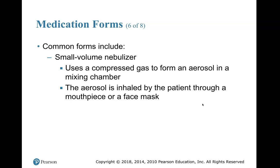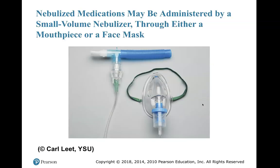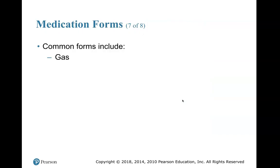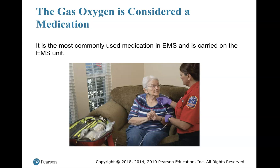The small volume nebulizer uses compressed gas to form an aerosol in a mixing chamber. The aerosol is inhaled by the patient through a mouthpiece or face mask. You put the albuterol in the cup with oxygen, which creates a mist the patient breathes in through the mouthpiece. You can also remove the reservoir bag from a non-rebreather and hook up the small volume nebulizer so it acts like a non-rebreather with the nebulizer.